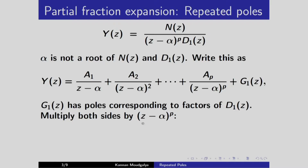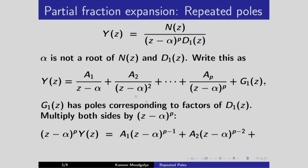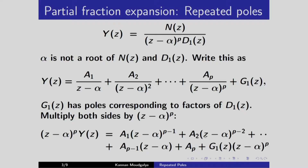We multiply both sides by (z minus alpha)^p. The left-hand side becomes the expression shown. We get a1 times (z minus alpha)^(p-1), where one power of (z minus alpha) gets cancelled, all the way up to the (p-1)th term. For a_p, (z minus alpha)^p gets cancelled, and the last term is g1(z) times (z minus alpha)^p.